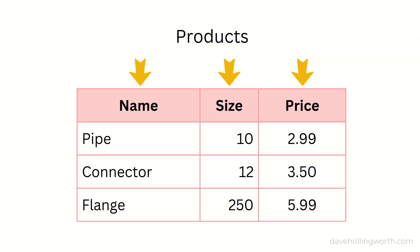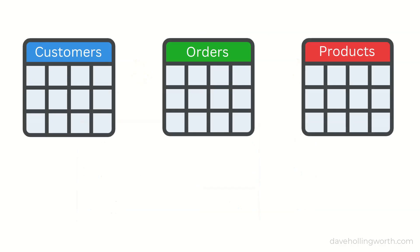An individual database can contain several tables, and these tables can be related to each other. This is where the name relational database comes from. For example, in a database for a shop, you might have a customers table, a products table, and an orders table that links these together.